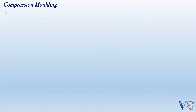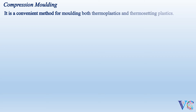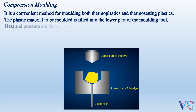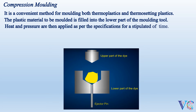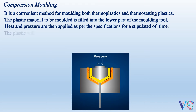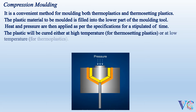Compression Molding is a convenient method for molding both thermoplastics and thermosetting plastics. The plastic material to be molded is filled into the lower part of the molding tool. Heat and pressure are then applied as per the specifications for a stipulated period of time. The plastic will be cured either at high temperature for thermosetting plastics or at low temperature for thermoplastics. The cured plastic is then taken out of the molding tool for further processing.